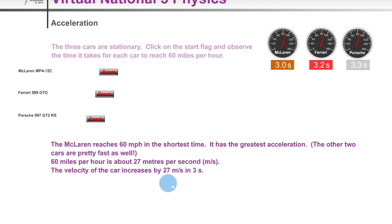So we could say the velocity of the car increases by 27 meters per second in three seconds, which is the same as 9 meters per second. So in one second we can say the velocity of the car changes or increases by 9 meters per second, i.e. the car has an acceleration of 9 meters per second squared.